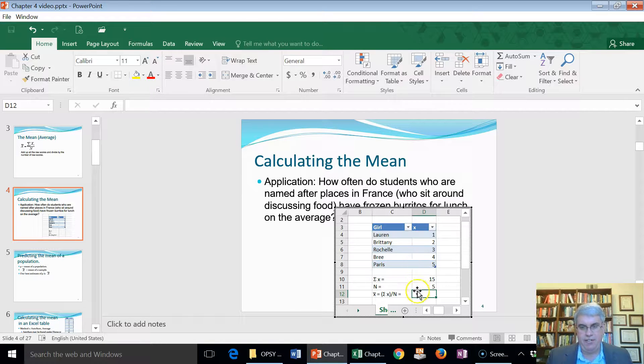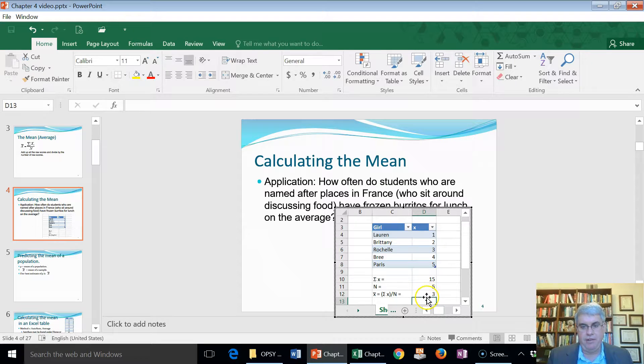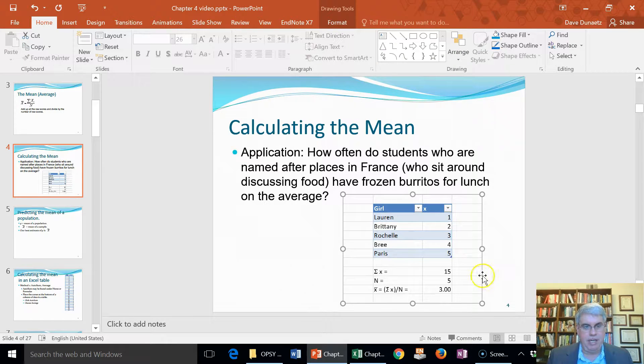And now I want to calculate the average, and so I've written x̄ equals the sum of x divided by n. And so that's going to be equal to D10 divided by D11. And so I can click on that, and then I press enter, and it'll give us an average of three. It's 3.00, that's why we have no decimals showing. But to show that it's exactly 3.00, I could select that cell, go to home, choose general, and choose number, and that shows that, yes, it is exactly 3.00. So that's how we can calculate the mean in Excel.